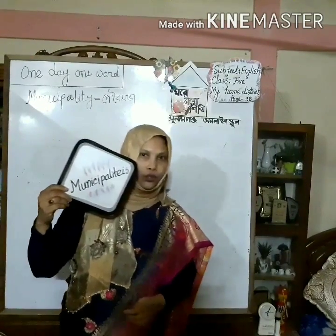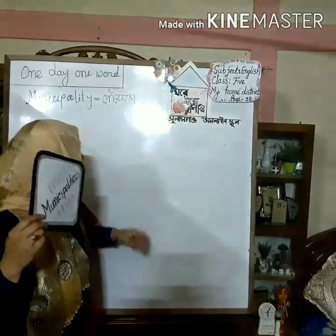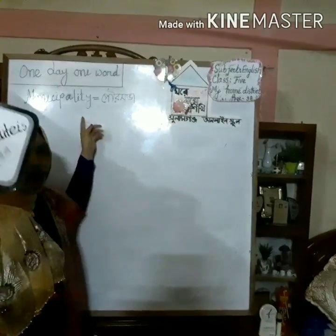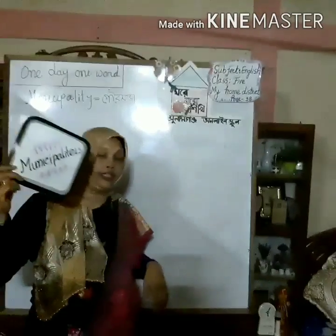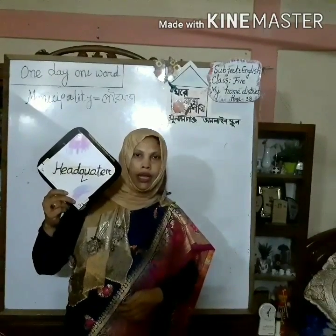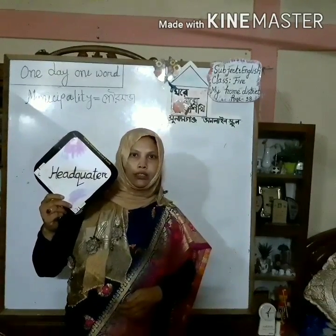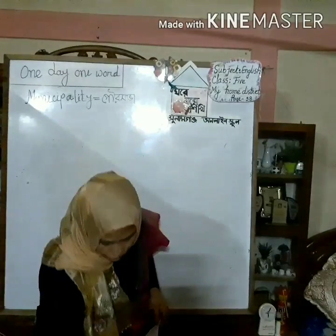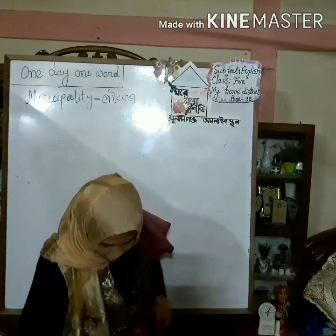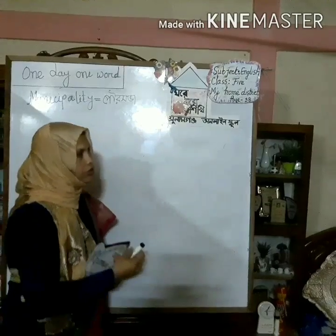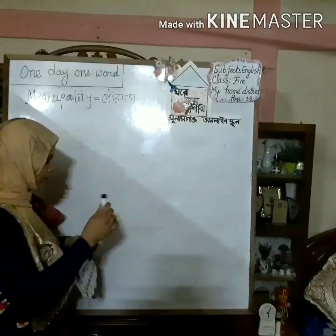My dear students, look — my one word is 'municipality,' but this is 'municipalities.' Another word is 'headquarter.' Headquarter. Now my dear students, I will write the new words with their meanings on the board. Please all of you look at the board and be attentive.